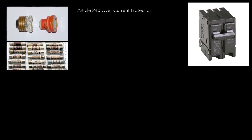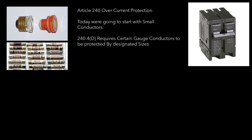We're in Article 240, and that's gonna be our overcurrent protection article in the NEC. Today we're gonna be dealing with small conductors — so this is when you're dealing with small conductors: 14, 12, and 10 gauge. Section 240.4(D) requires certain gauge conductors to be protected by designated overcurrent device sizes, and we're gonna talk about that now.